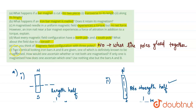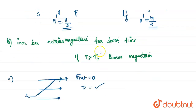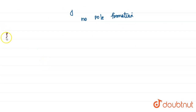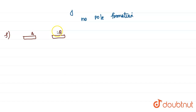Question F: two identical looking iron bars A and B are given, one of which is definitely known to be magnetized. How would one ascertain whether or not both are magnetized, and if only one is, which one — using nothing else than bars A and B? It is suggested that when the bars are placed near a magnetic field, both can be magnetized or only one can be magnetized.